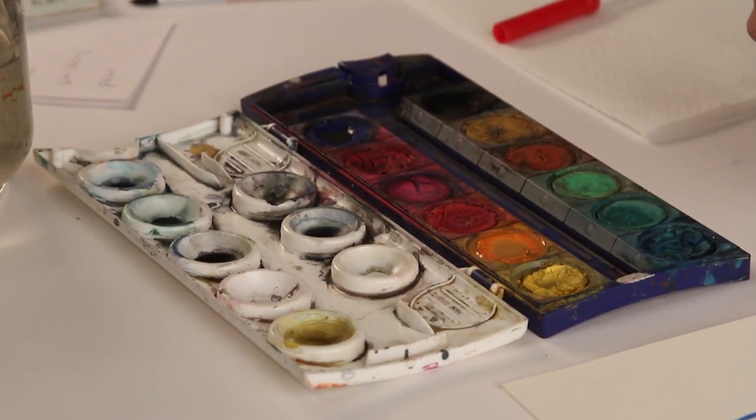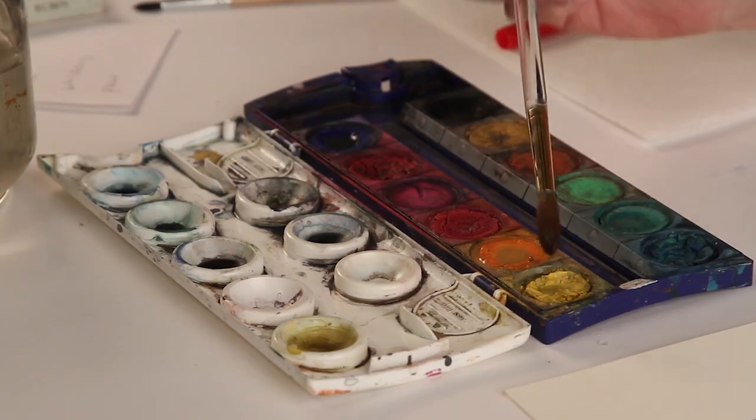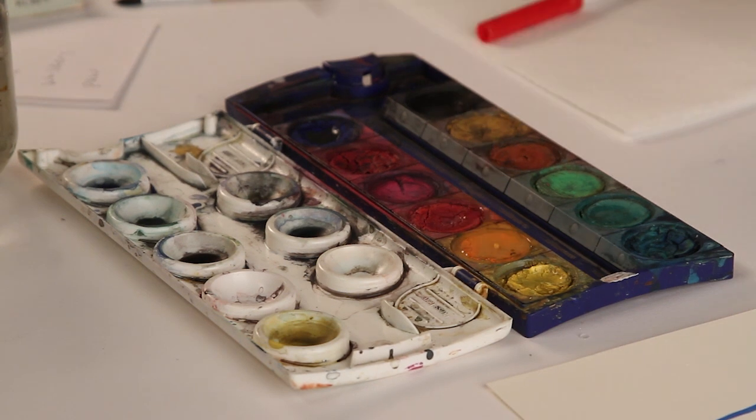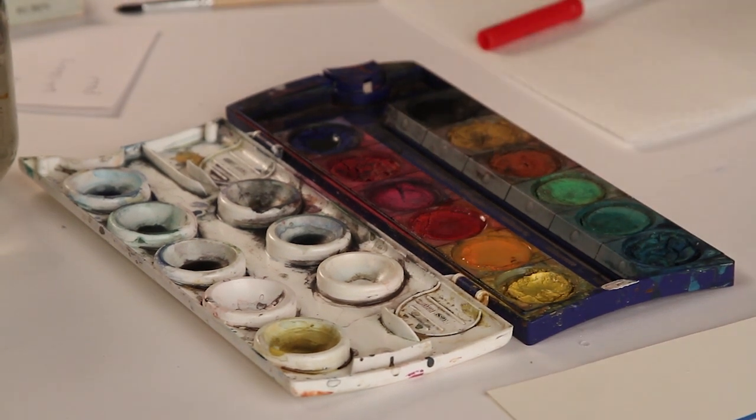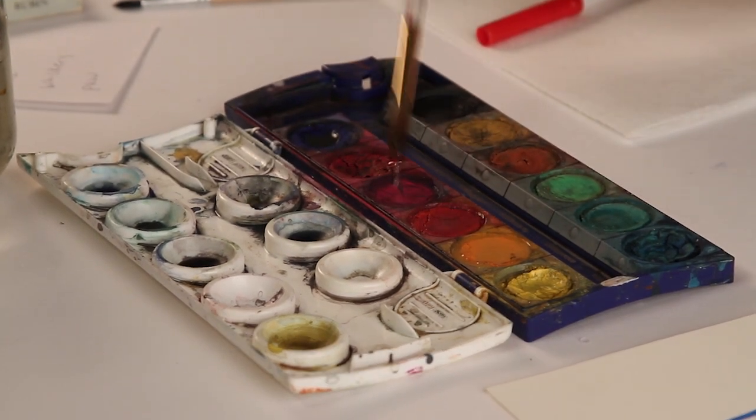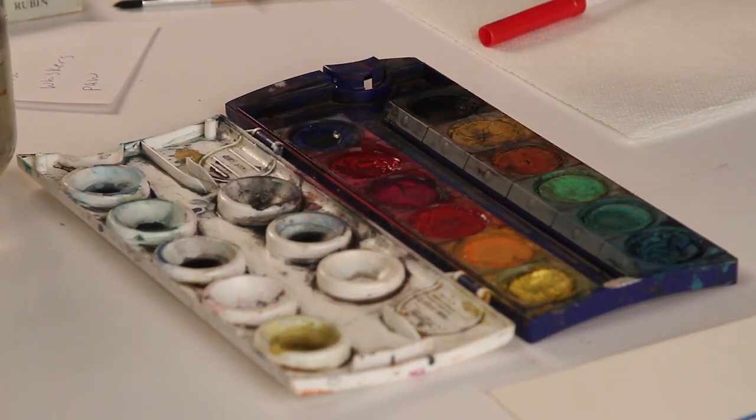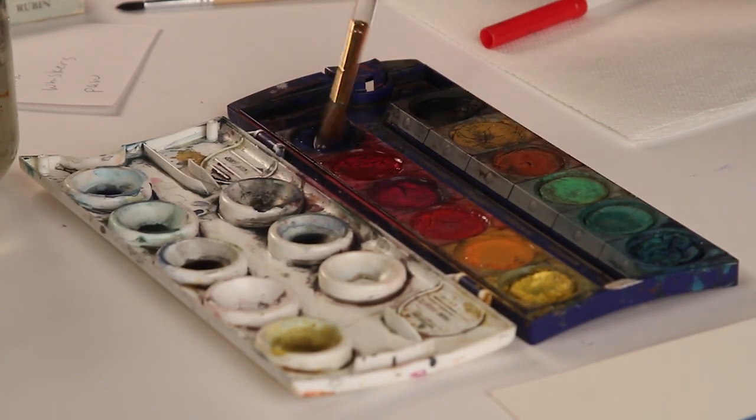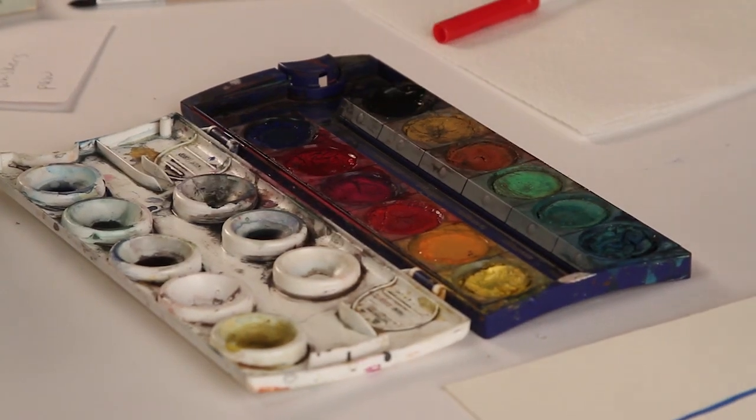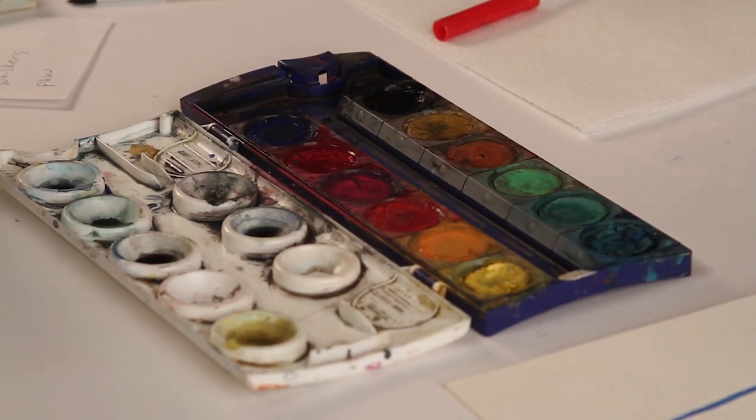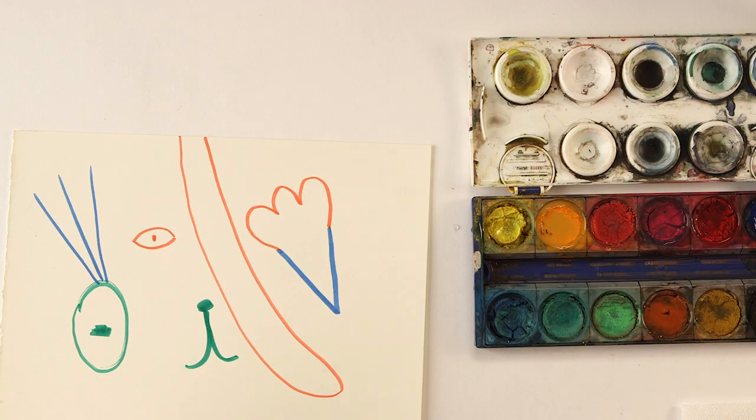But first we're going to get our watercolors ready. This is a set of watercolors. And the first thing I usually do whenever I have watercolors, is I'll take my brush and just put a little bit of water in every pot. And that way, while I'm looking at my drawing and trying to decide how I want to paint it, the water is making the watercolor softer so it'll be easier to work with. And I go ahead and I don't even know what colors I'm going to use, so I just go ahead and add water to all of them.